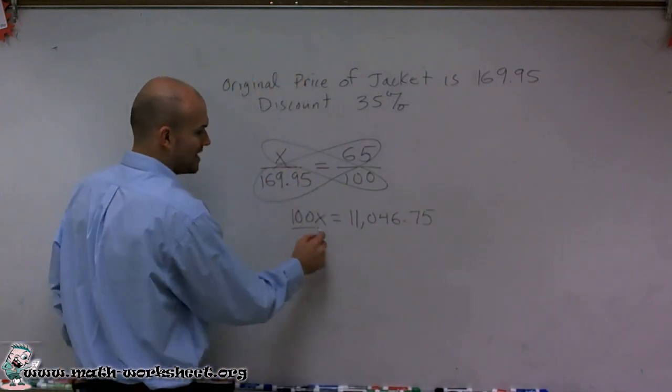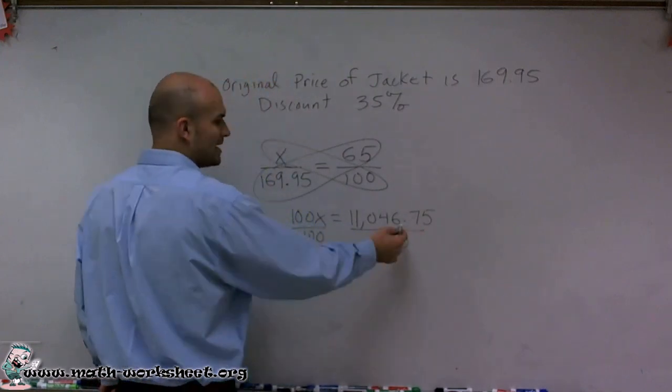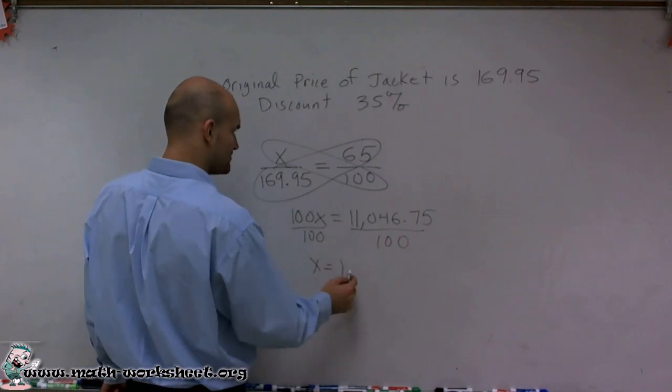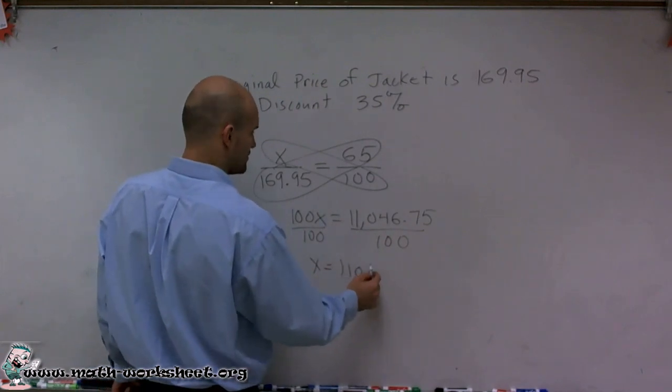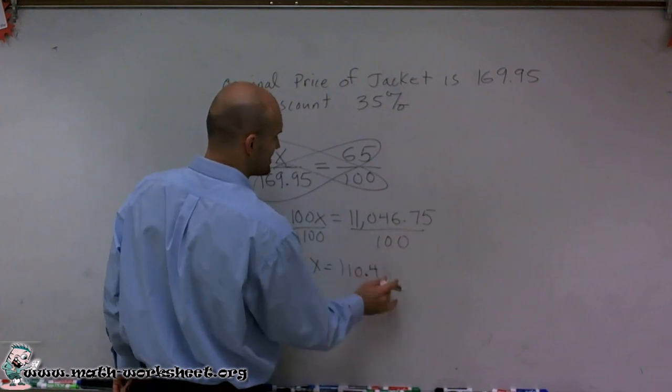So now what I'm going to do to solve for X is divide by 100, and when divided by 100, that means I'm just going to move my decimal point over two spots. So therefore X equals $110.47.